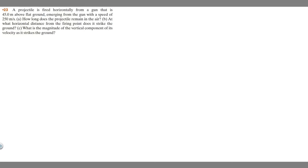In this problem, we're told a projectile is fired horizontally from a gun that is 45 meters above flat ground, emerging from the gun with a speed of 250 meters per second. Part A asks how long does the projectile remain in the air. Part B asks at what horizontal distance from the firing point does it strike the ground. And Part C asks what is the magnitude of the vertical component of its velocity as it strikes the ground.